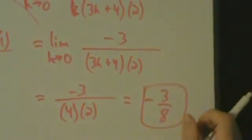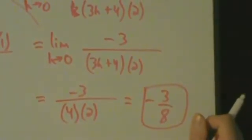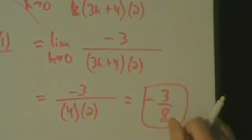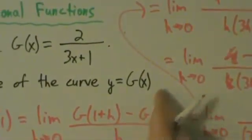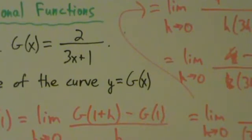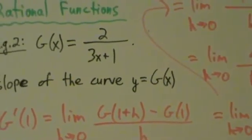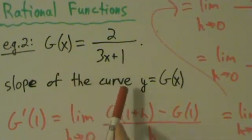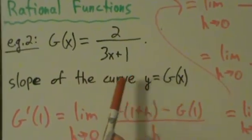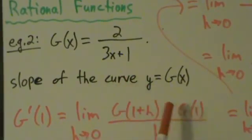So G'(1) = -3/8. In other words, the slope of the curve y = G(x) when x = 1 is -3/8. Okay. So if you were to graph this function and if you were to graph the tangent line at the point where x = 1, that tangent line would have slope -3/8. And we also say that the slope of the curve is -3/8 there. So that's example 2 for rational functions.